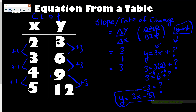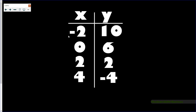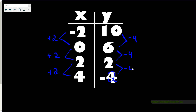Let's try another example — this one's a bit easier. We have a new table. Looking at x, it's going up by two. Looking at y, it's going down by four. For decreasing values, we represent that as negative four. So we'll do delta y over delta x — change in y over change in x.